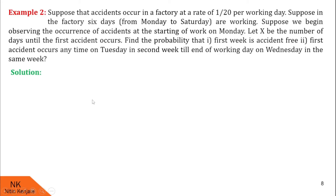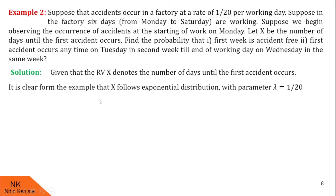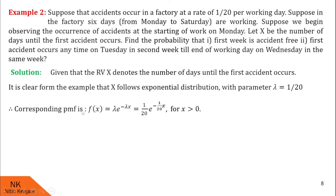Let us proceed for the solution. Random variable x denotes the number of days until the first accident occurs. It is clear that x follows exponential distribution with rate parameter lambda = 1/20. The corresponding PDF f(x) = lambda × e^(−lambda × x) = (1/20) × e^(−(1/20)x).